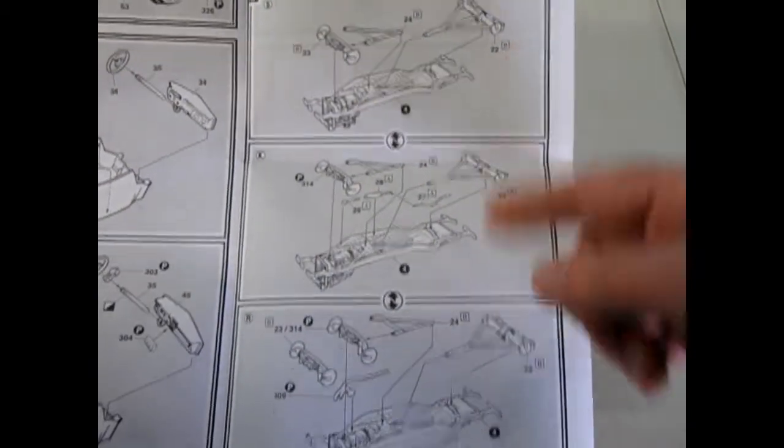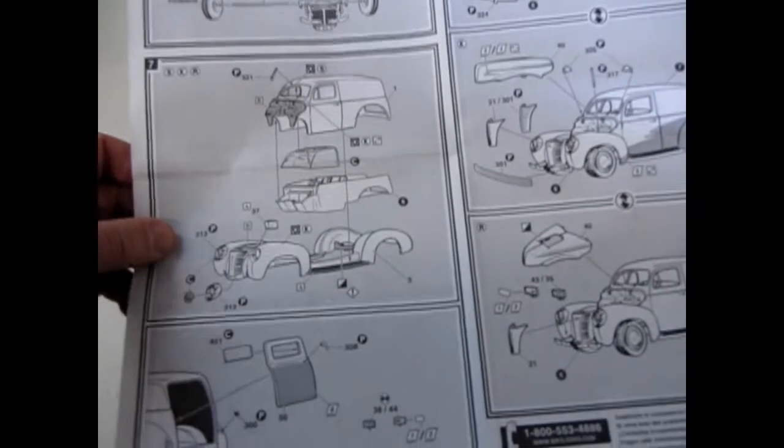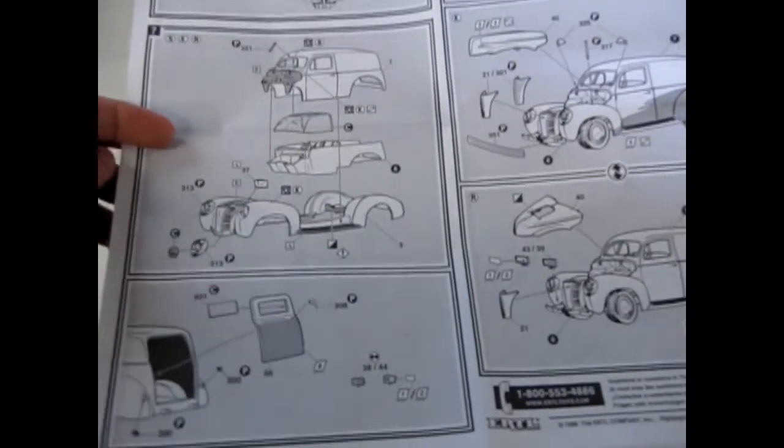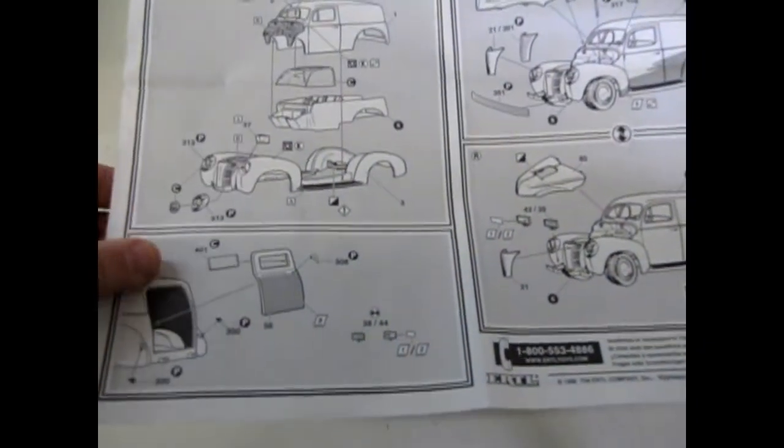This part is the same. And keep in mind that our engine is universal for those because, again, this is a Trophy Series kit. So you can replace the Buick nail head with a Pontiac motor or something from one of the other 32, 36, and 40 Ford kits, 39 Ford as well.